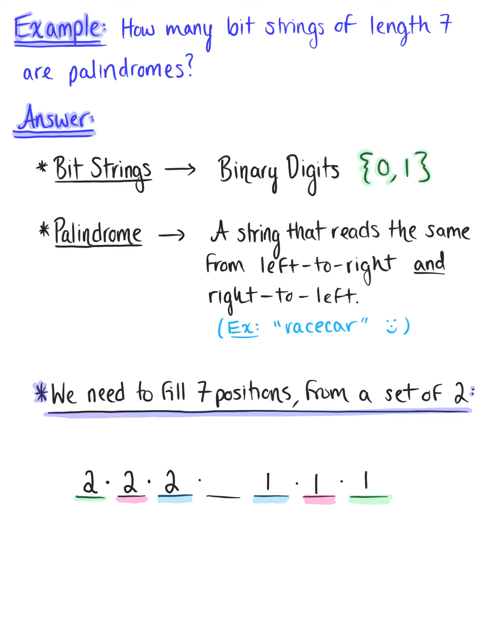Now the wildcard here is position number four. But keep in mind that even though it's our wildcard, there's still only two choices for that position, zero or one. So by the rule of products, this tells us that there are two to the fourth or 16 different bit strings of length seven that are palindromes.